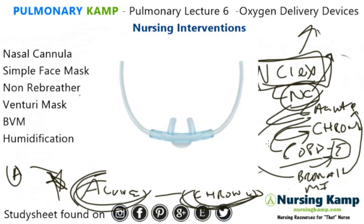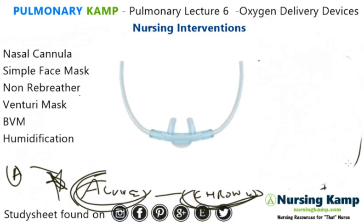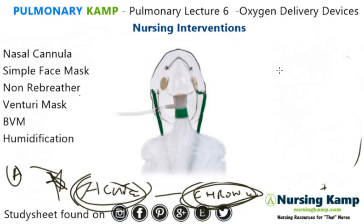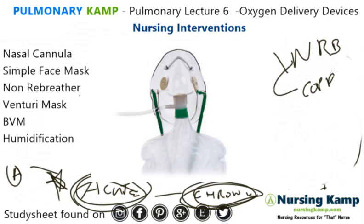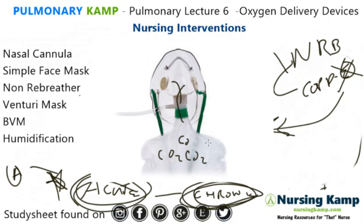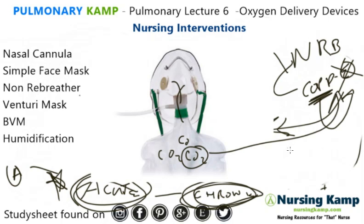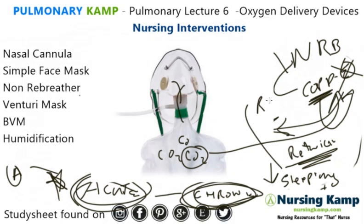The next oxygen delivery device you need to be aware of is called a non-rebreather. For non-rebreathers, patients who have COPD or emphysema do not get non-rebreathers. The reason is that all the CO2 starts to build up in the bag and they breathe it back in. COPD patients tend to be CO2 retainers — they hold on to the CO2 — which makes the patient very sleepy and leads to respiratory compromise and respiratory distress.